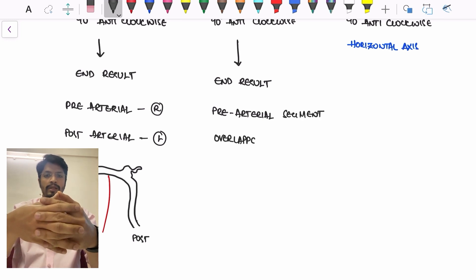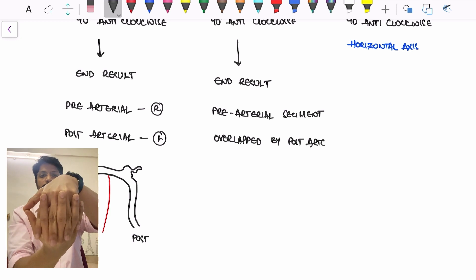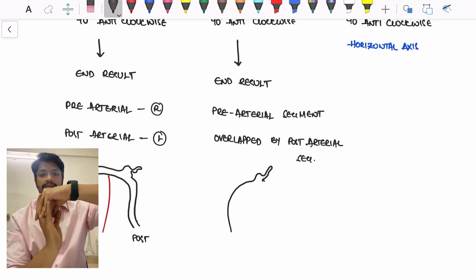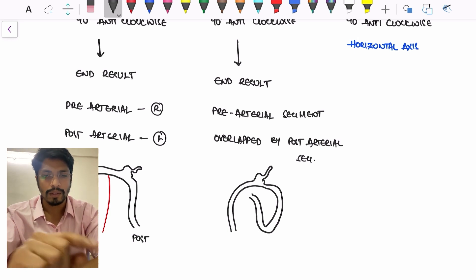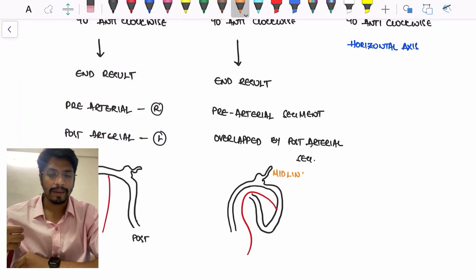Similarly, in the second phase, there is another 90 degrees anticlockwise direction. This results in the cecum being in the midline. And the final 90 degrees rotation is a horizontal axis. In horizontal axis, the cecum enters the abdomen first compared to that of the pre-arterial segment.